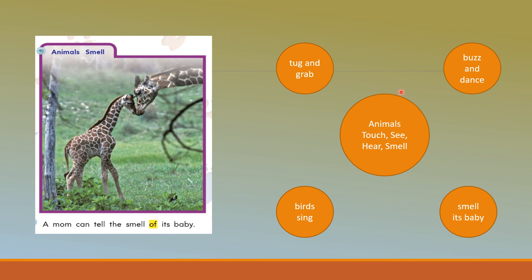So if we look at this, the main idea is: animals touch, see, hear, and smell. The details are: they can tug and grab, they can buzz and dance, birds will sing, and they can smell their babies.